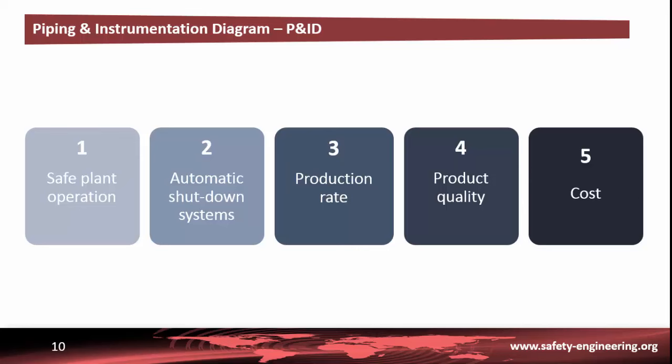Product quality, production rate, and the cost of production are dependent on sales requirements. For example, it may be a better strategy to produce a better quality product at higher cost. In a typical chemical processing plant, these objectives are achieved by a combination of automatic control, manual monitoring and laboratory analysis.